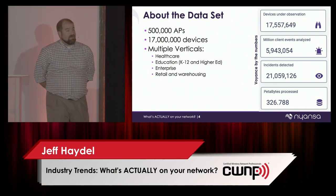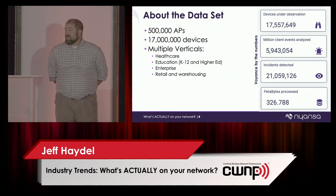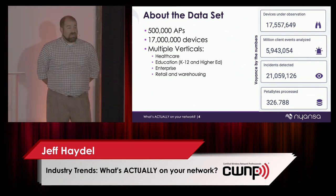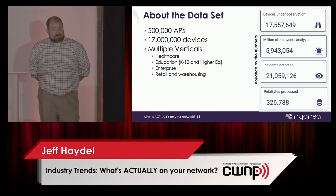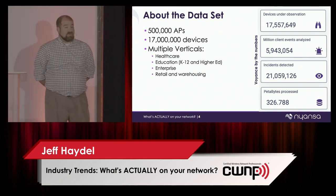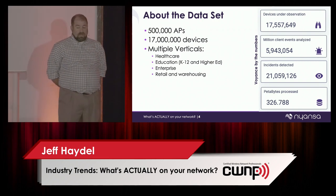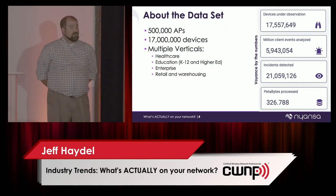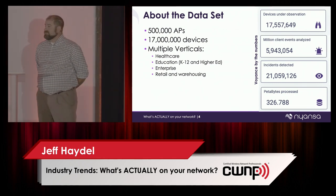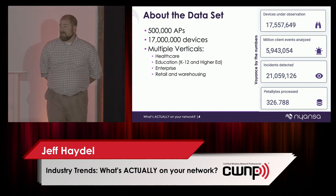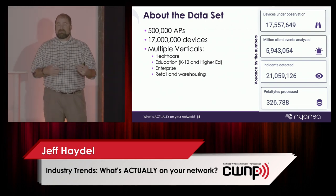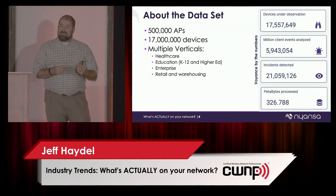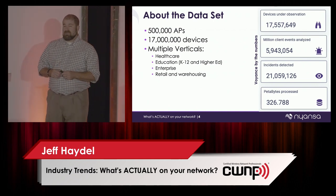The data set is important. If I'm going to make inferences about what I've seen on the network, you've got to know what I'm looking at. This data comes from half a million APs in our system — from our customers — about 17 million clients across all verticals, across a bunch of different vendors and manufacturers of APs and switches. We keep verticals separate: healthcare, retail, higher ed, and enterprise. But the various AP manufacturers are mixed together, because in the end the clients are the same and what those clients are doing is comparable.